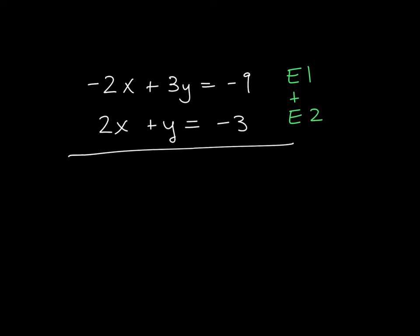Negative 2 plus 2, so my first term just goes to 0. This y is understood to have a 1 there. So 3y plus 1y would give me 4y is equal to negative 9 minus 3 is equal to negative 12. Divide both sides by 4, and I am left with y is equal to negative 3.